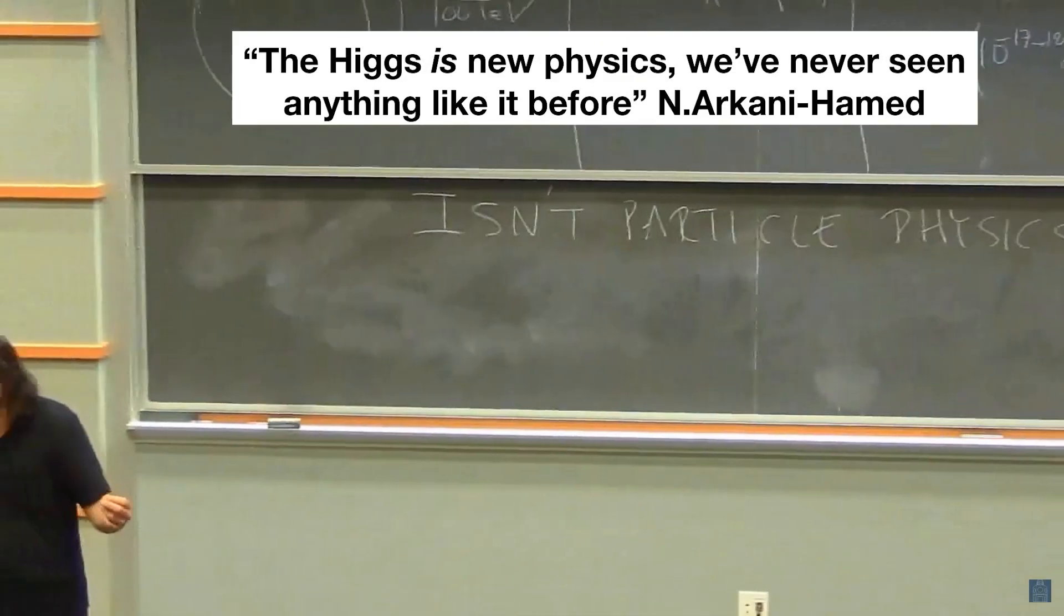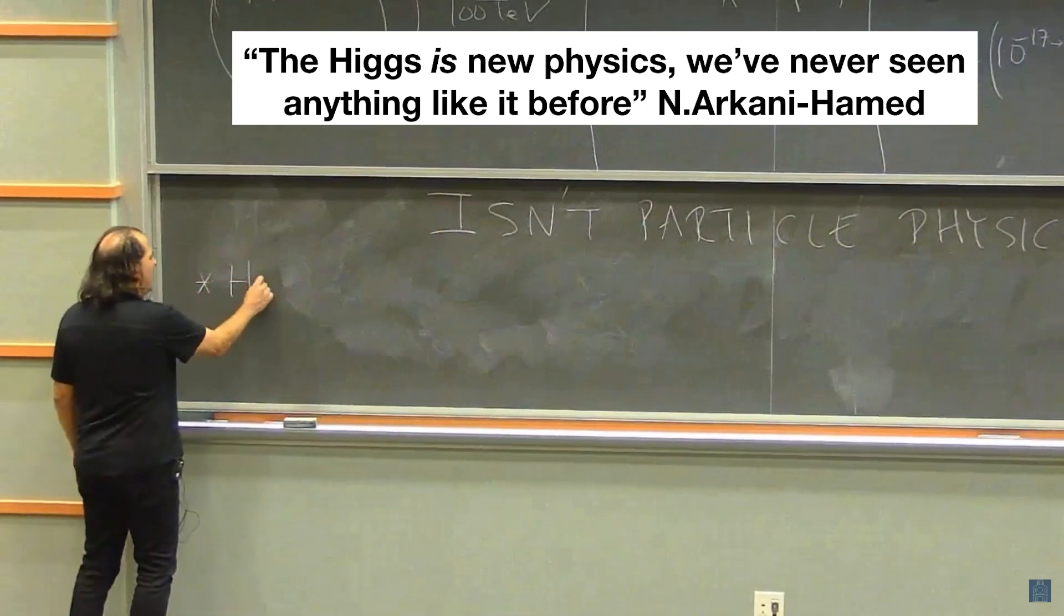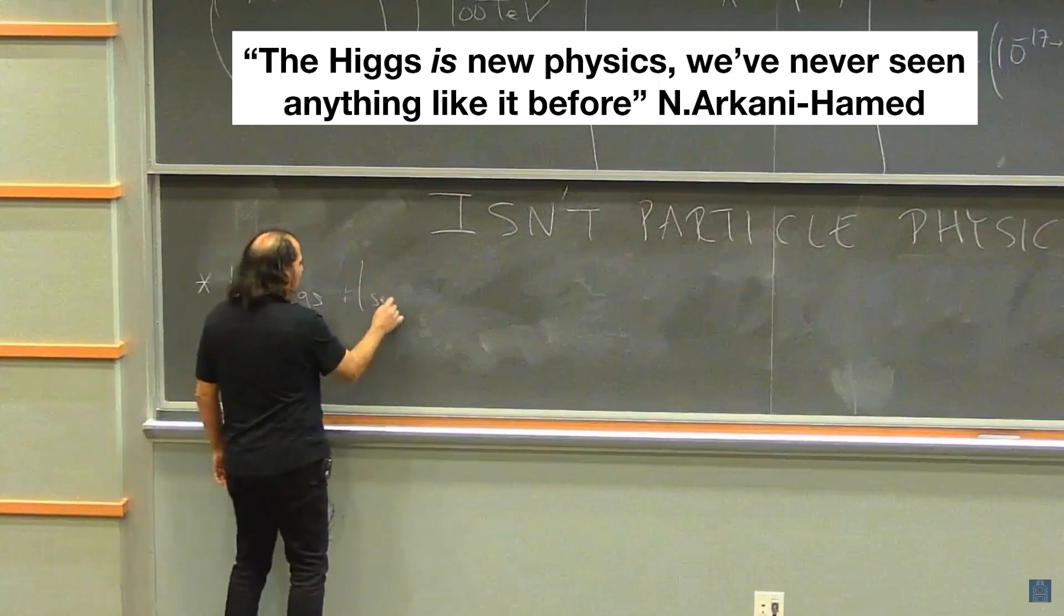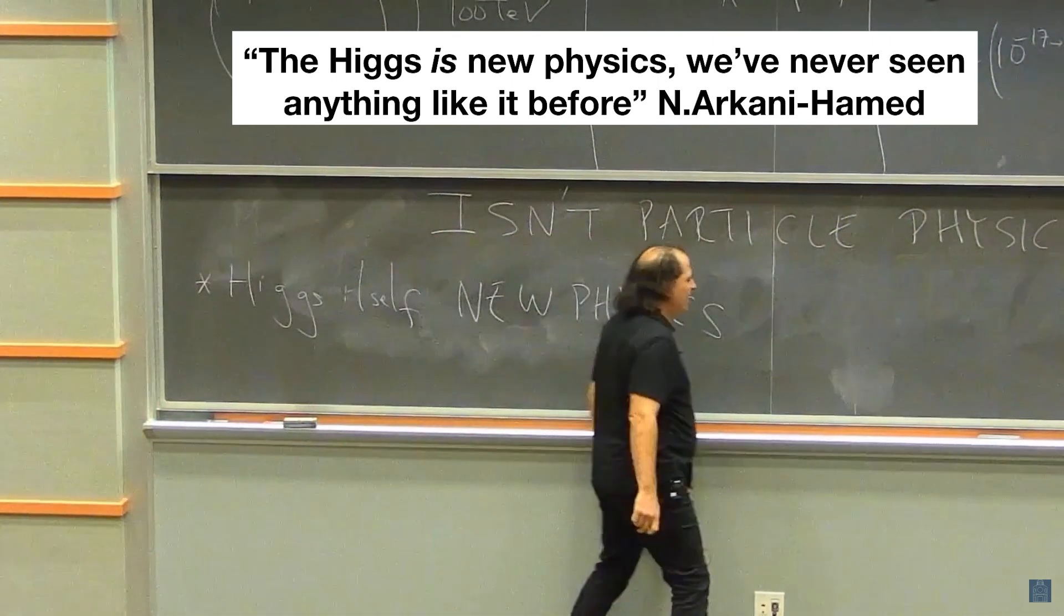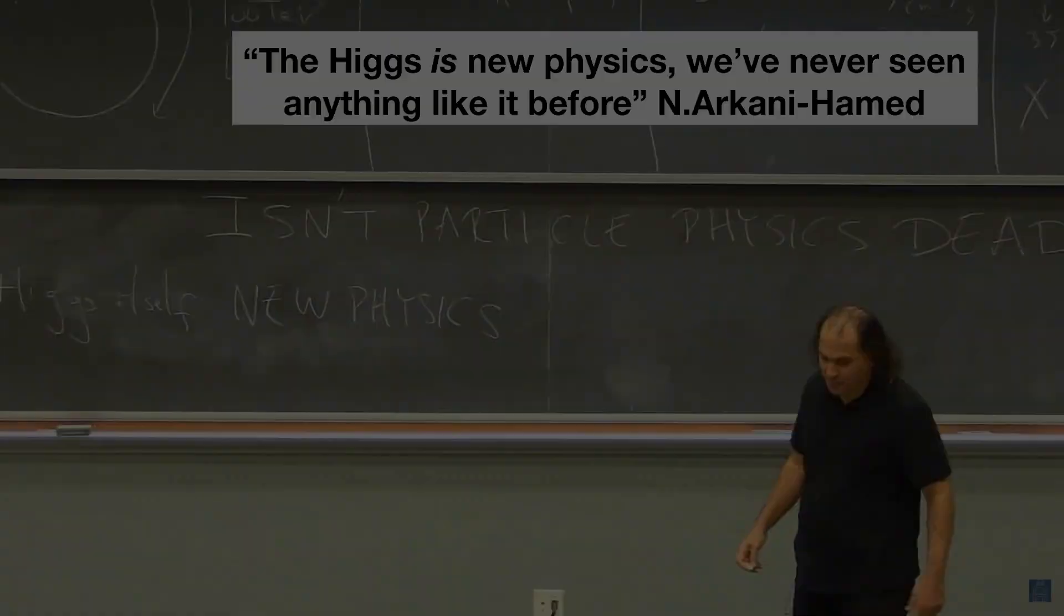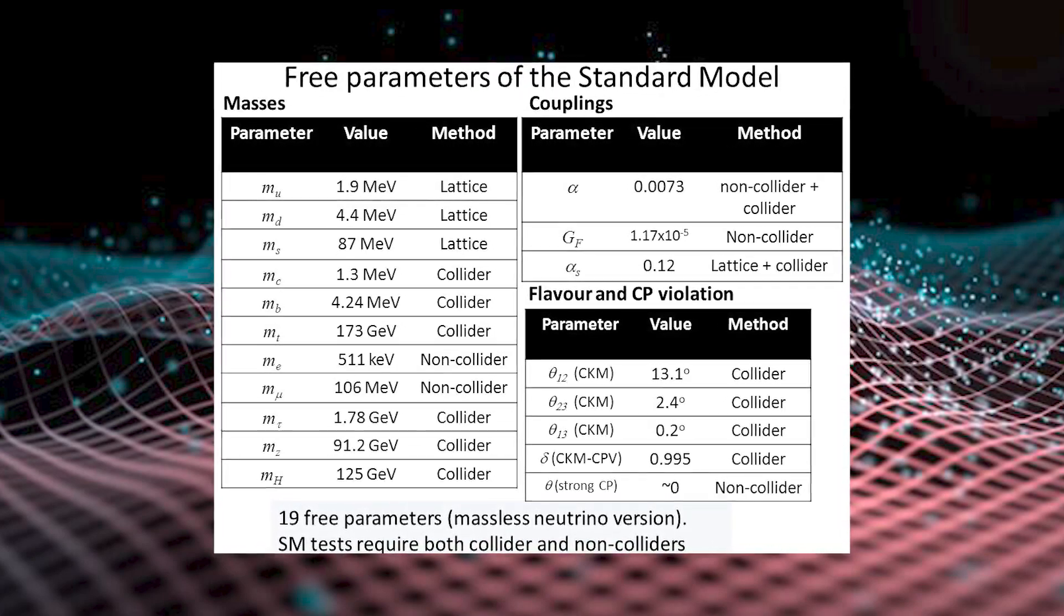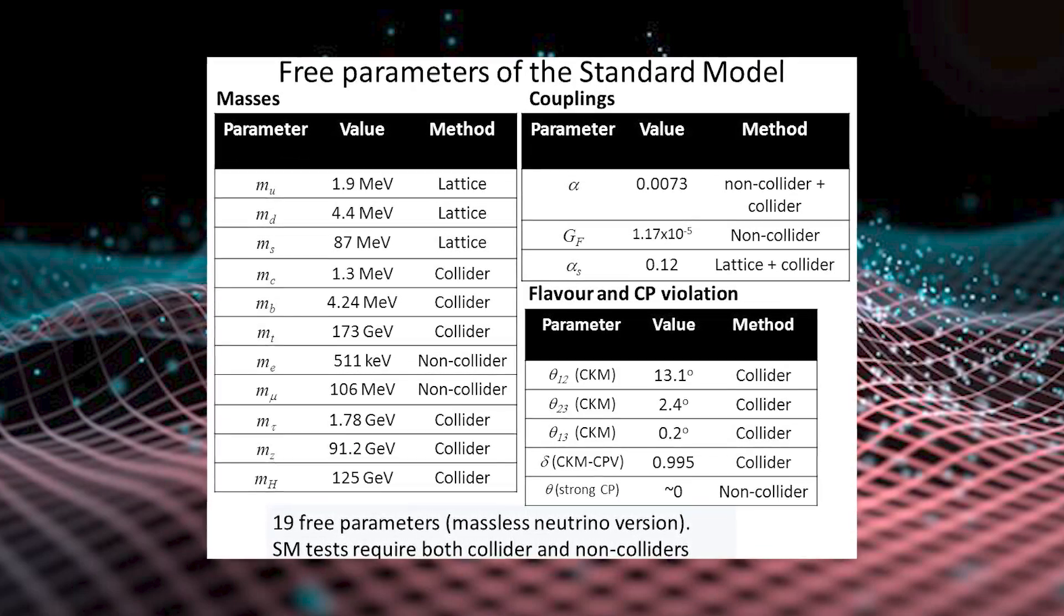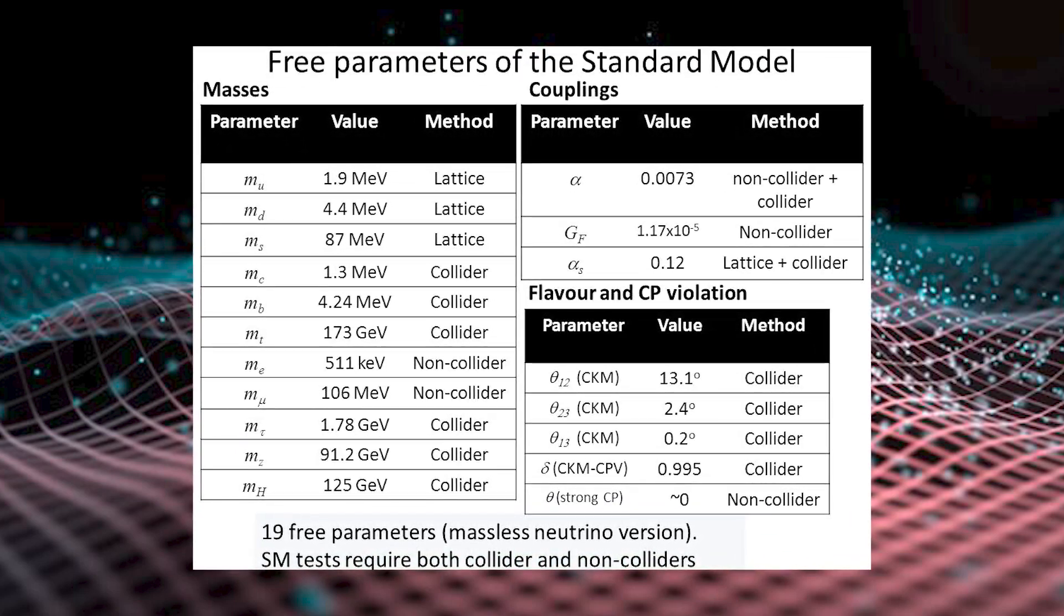The Higgs boson is a completely unique particle, the first ever seemingly fundamental spin-free scalar particle that we've ever observed, and the only one that exists within the framework of the standard model. There are 19 free parameters in the standard model, not including neutrino masses, that cannot currently be derived from theoretical first principles, but are instead determined and put in by hand from experiment.